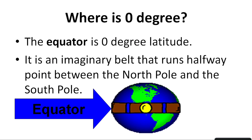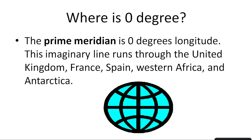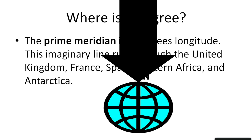Coming to the next concept related to this — the prime meridian or zero degree longitude. This is also known as GMT — Greenwich Mean Time — which runs through the United Kingdom, France, Spain, Western Africa, and Antarctica. All the watches of the world are matched with the time of places located on the Greenwich Mean Time or prime meridian. This is the line at the center.